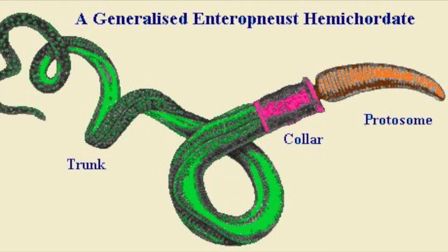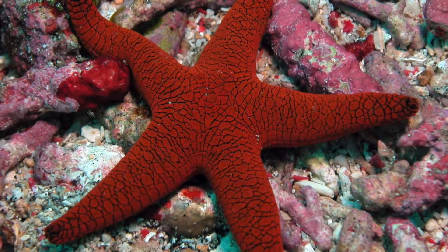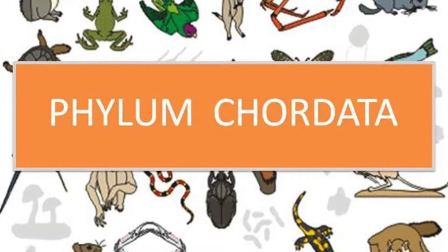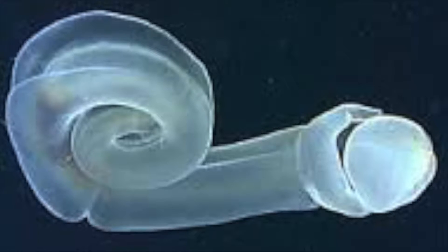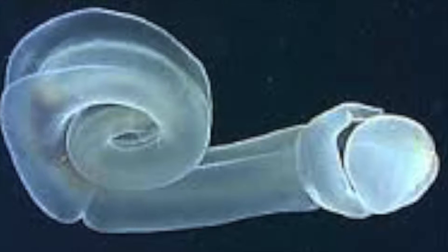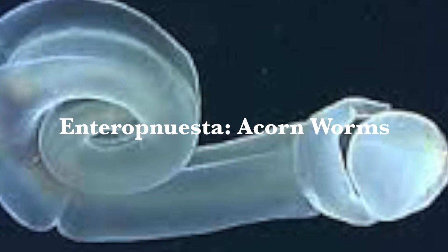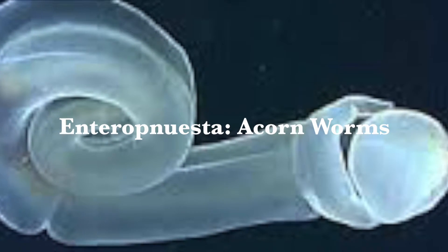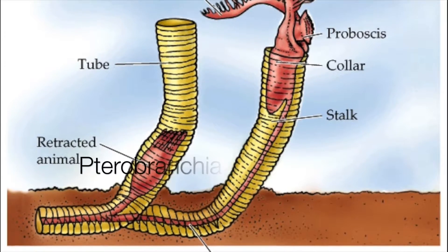Hemichordata are worm-like creatures that make up a small phylum of just a few hundred species and are the sister taxa to echinoderms and chordates. Phylum Hemichordata consists of two classes: the most common living group is Enteropneusta, often called acorn worms, followed by Pterobranchia.